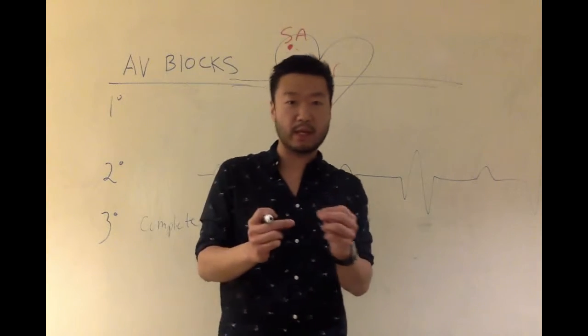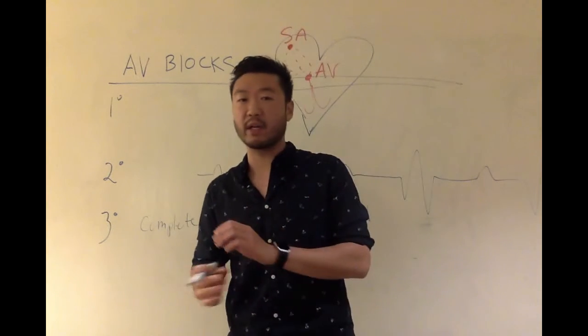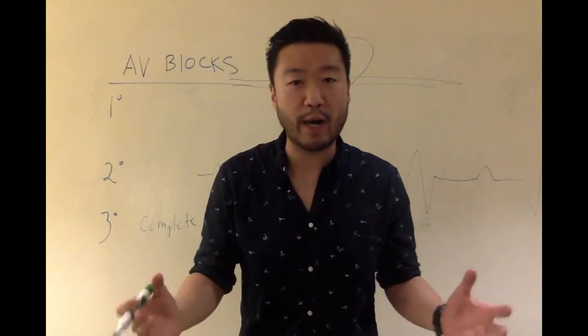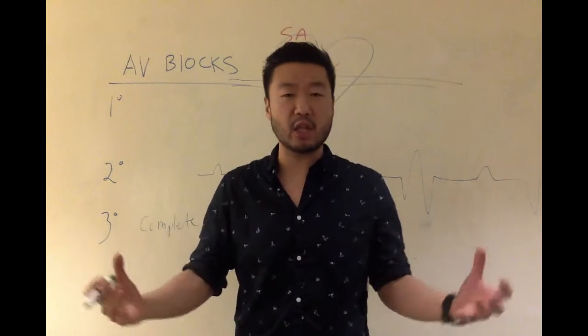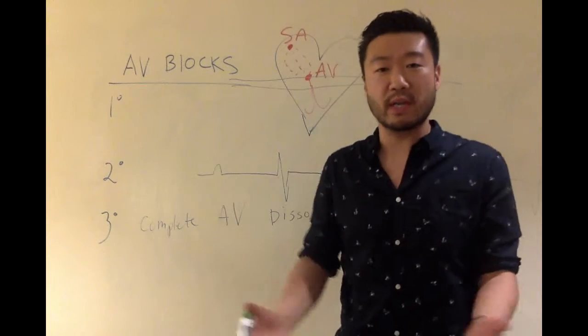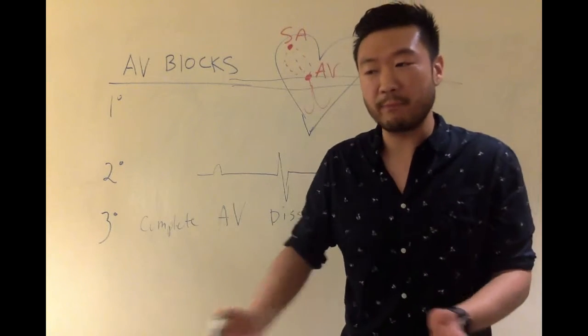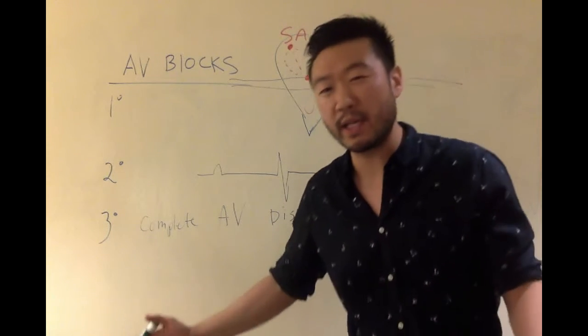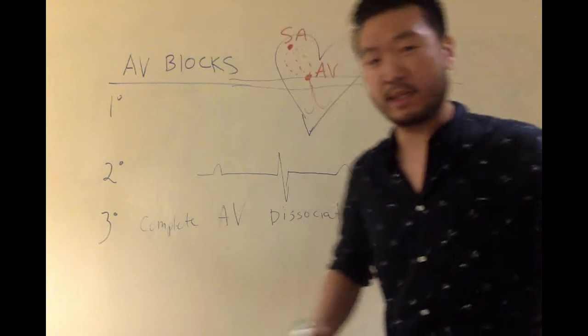And so typically on the EKG, you'll see someone, they're going to be extremely bradycardic, extremely slow heartbeat. And that's because the ventricles, they just naturally live at a slower rate. And so you'll see heart rates in the 20s, 30s, 40s.